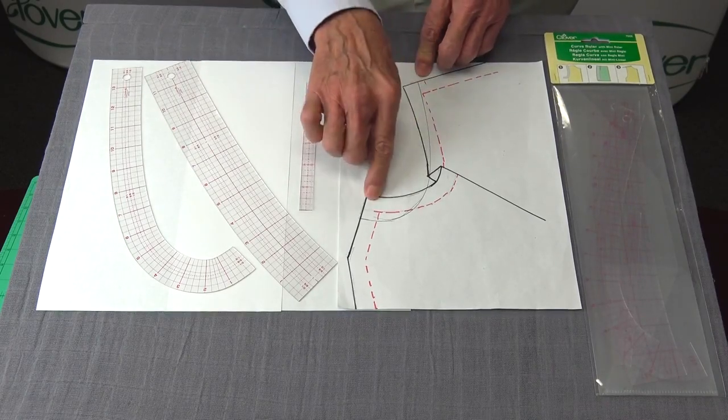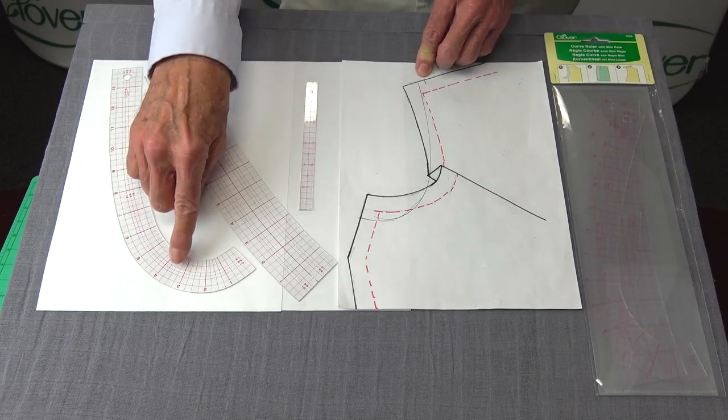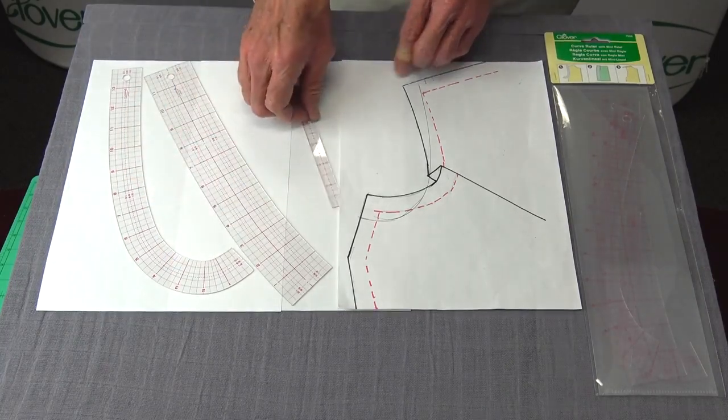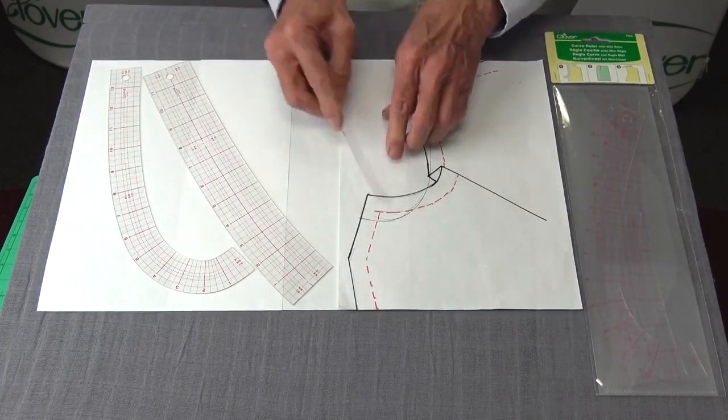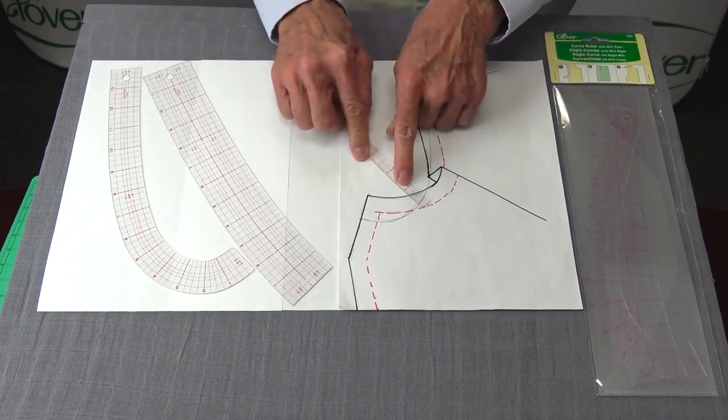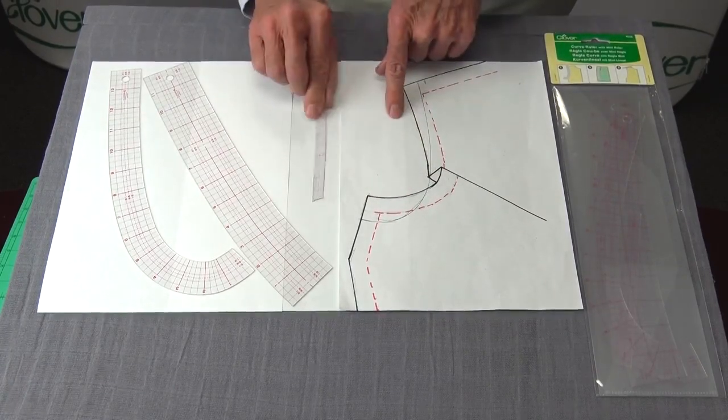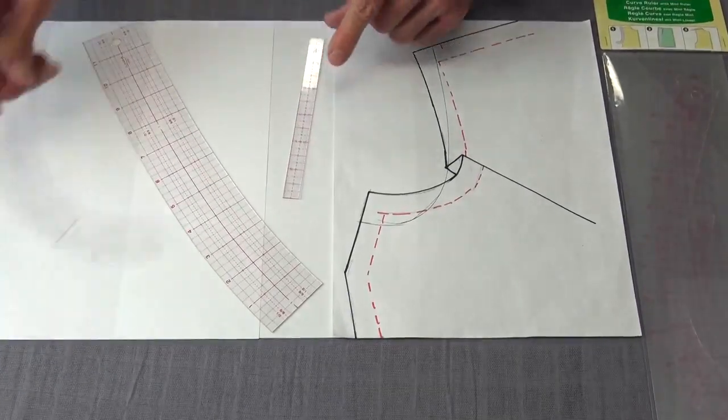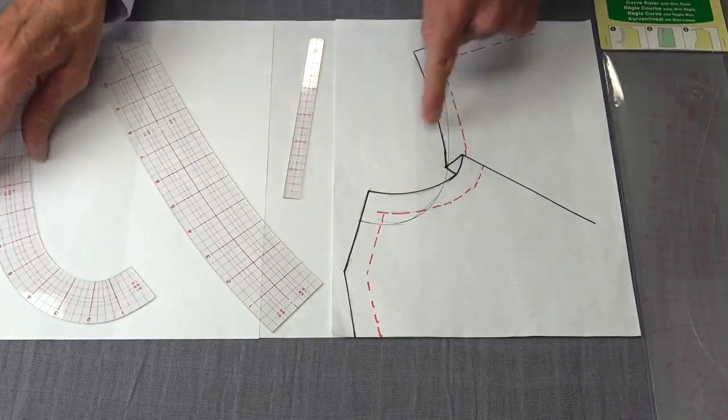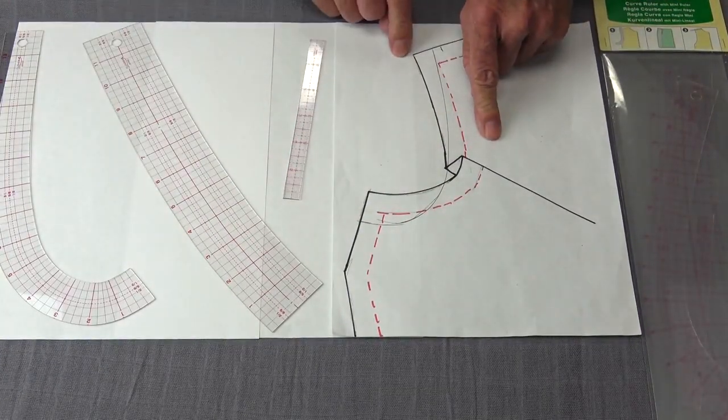We always need to have a seam allowance. Most seam allowances are 5 eighths inch, so that's shown here, or on our mini ruler, we even have 5 eighths inch. So you can actually mark up from here, 5 eighths of an inch, and mark your seam allowance all the way through, and then reuse your French curve to go back and make sure you have your seam allowances marked.